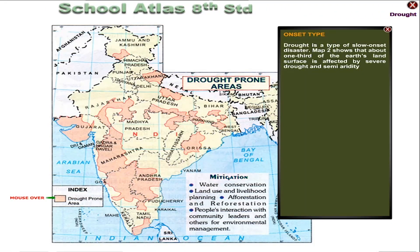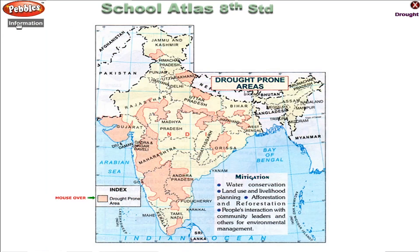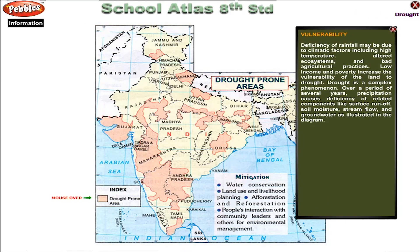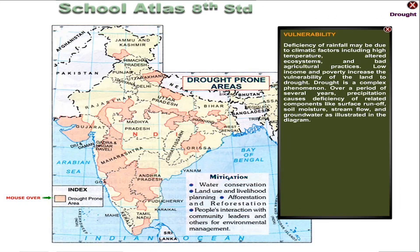Drought is a type of slow-onset disaster. Map 2 shows that about one-third of the Earth's land surface is affected by severe drought and semi-aridity. Deficiency of rainfall may be due to climatic factors including high temperature, altered ecosystem and bad agricultural practices. Low income and poverty increase the vulnerability of the land to drought. Drought is a complex phenomenon.